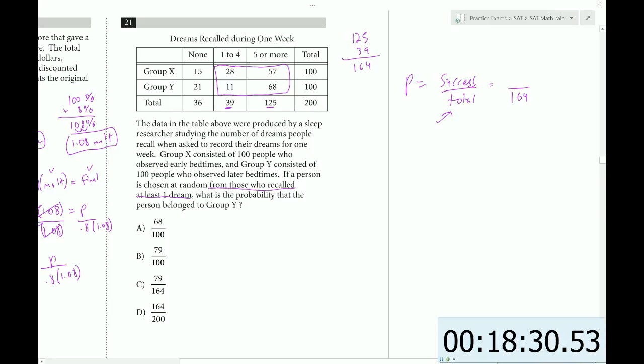Now we have to find the success. What is the probability that the person belonged to group Y? So group Y's total would be these numbers added together, so that would be 79. So that is answer choice C.